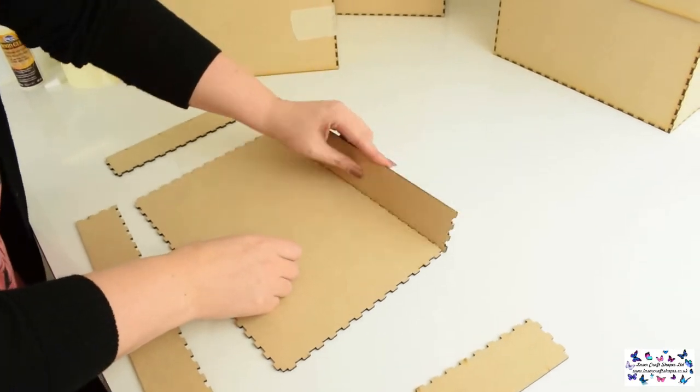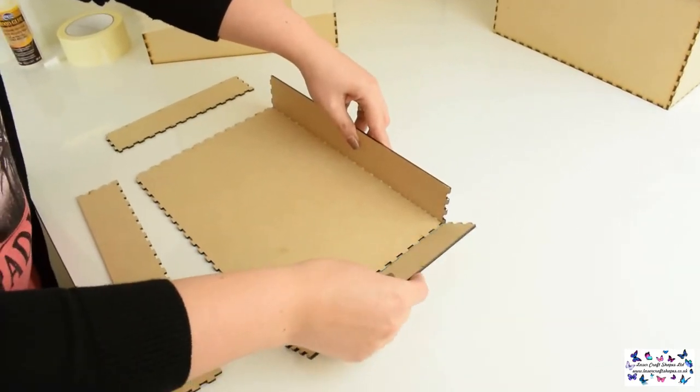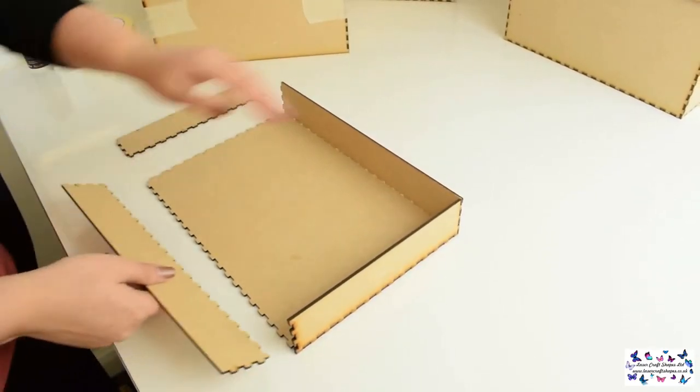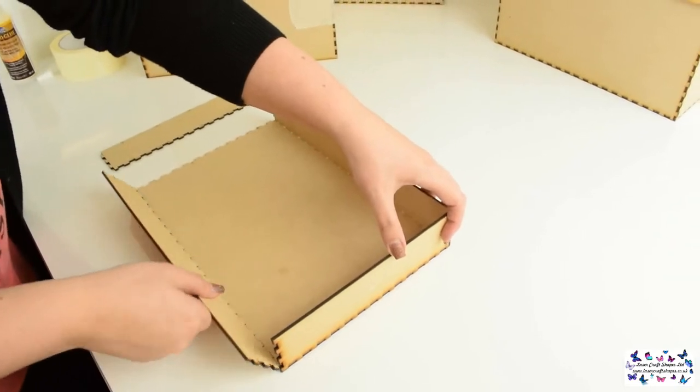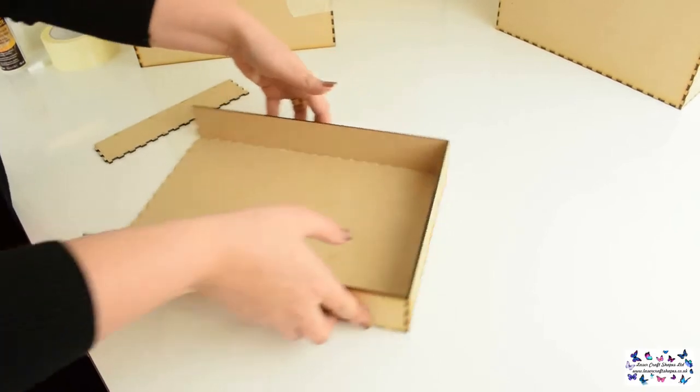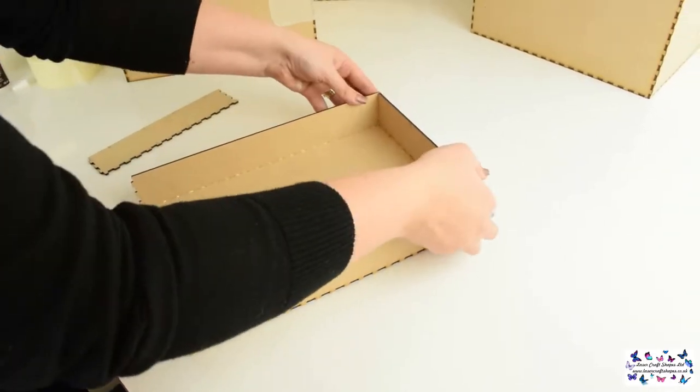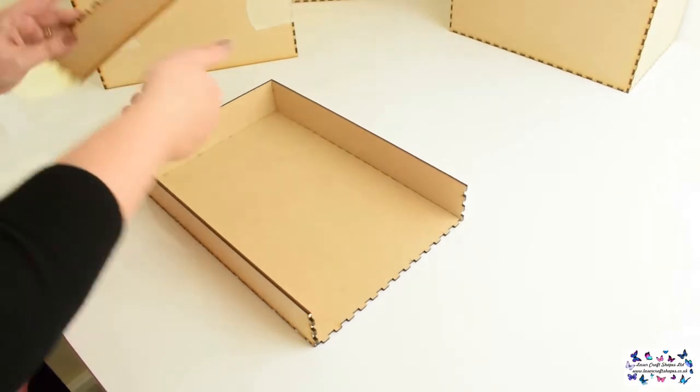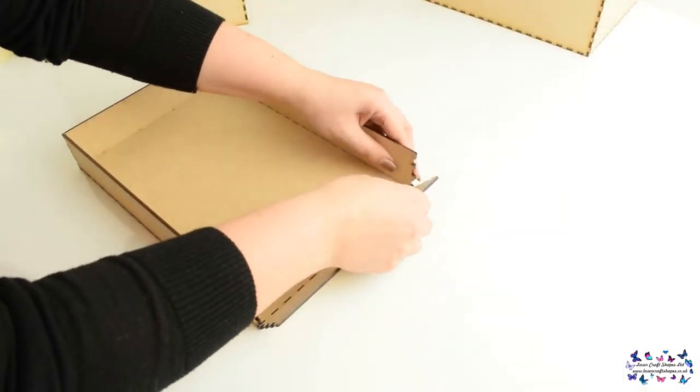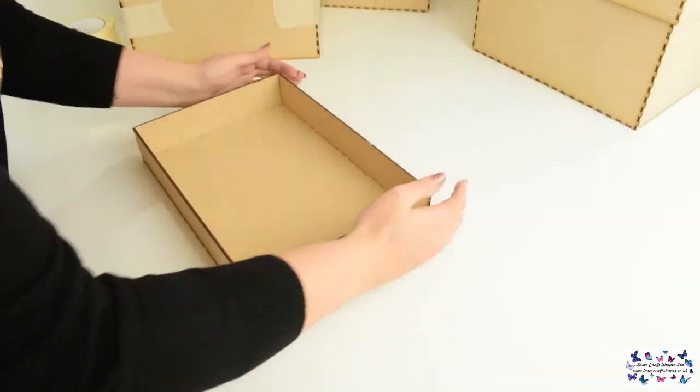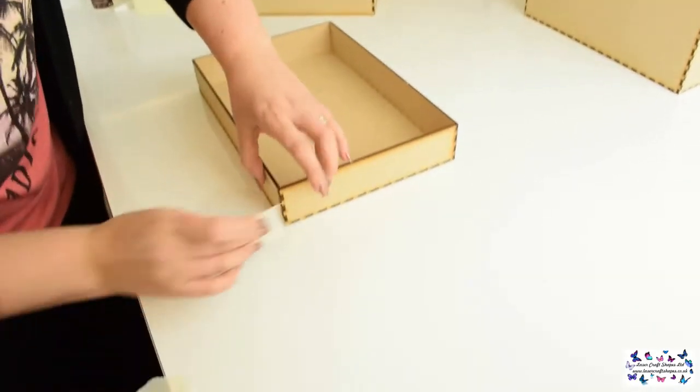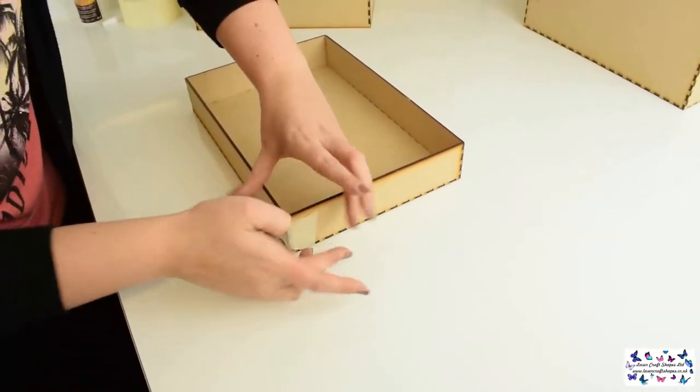Again slot them in and bring them up. Repeat this all the way round. Make sure it is all nice and secure. Wipe off any excess glue. Again you can apply masking tape to the corners.